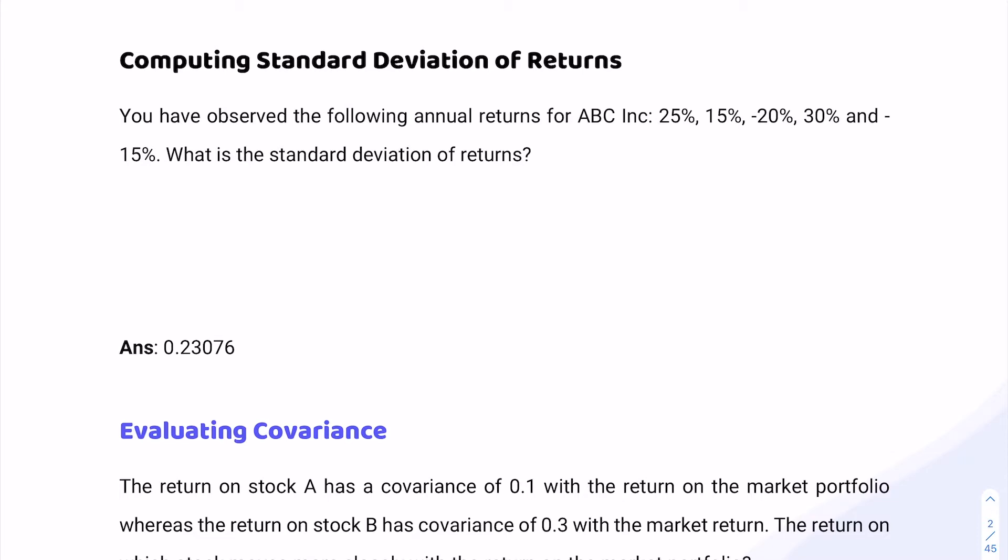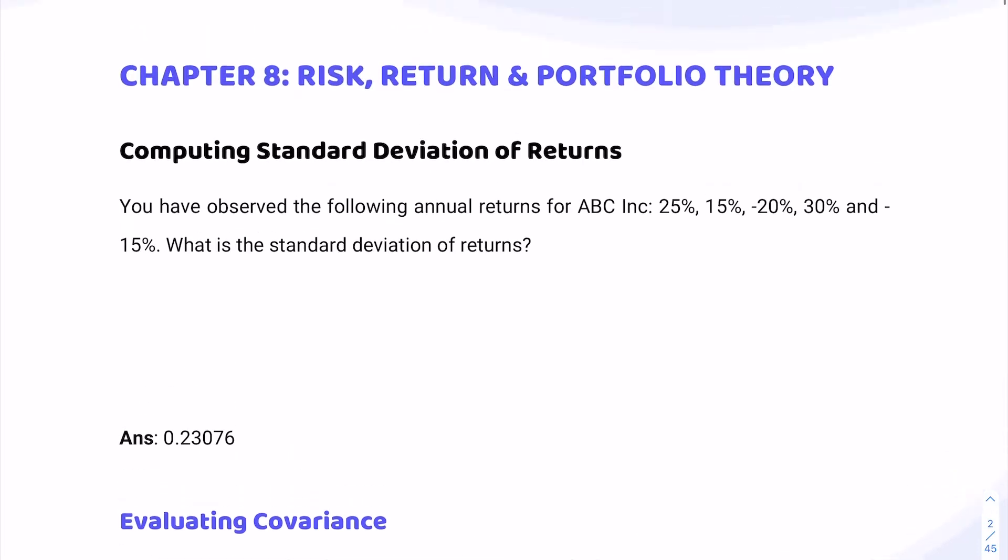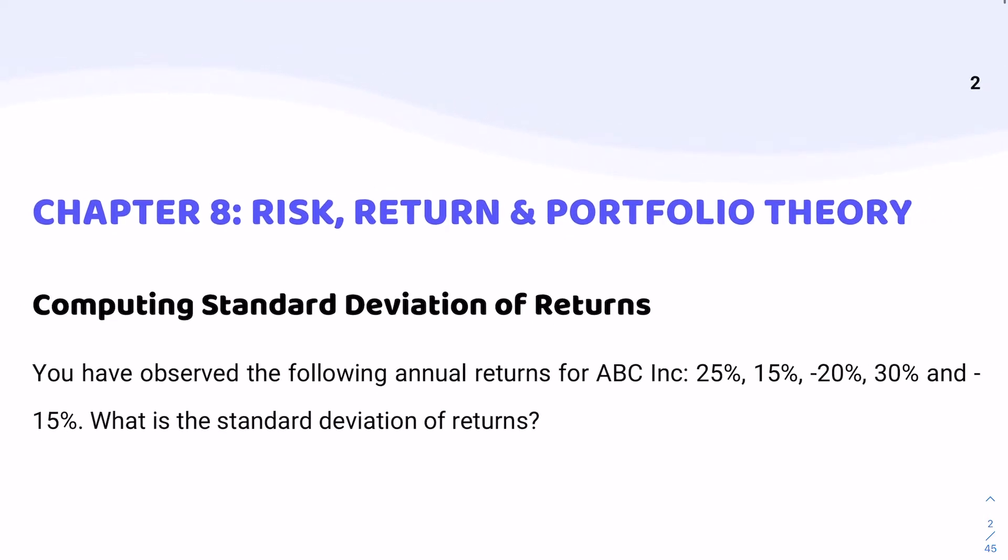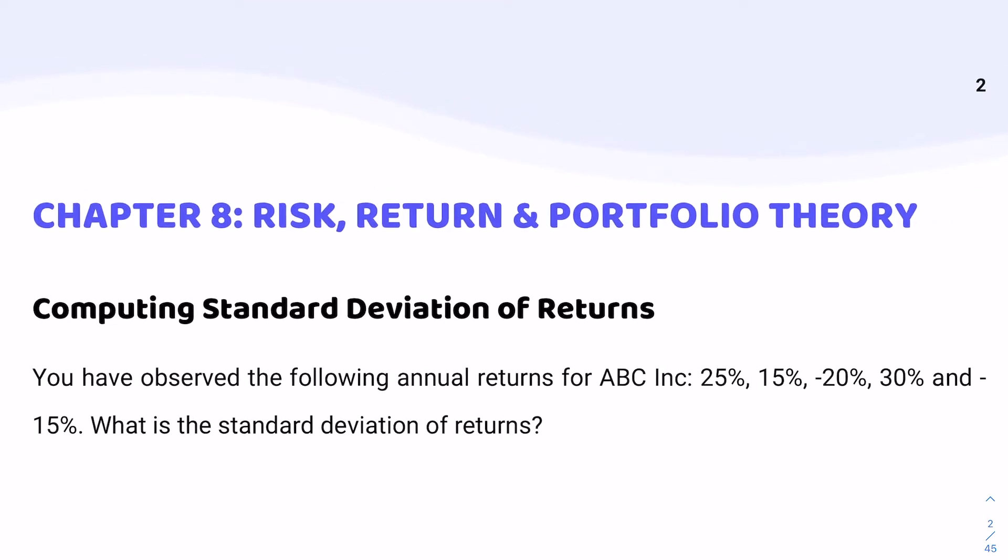In this question, we're looking at computing the standard deviation of returns. What is being asked from us? How do we break down the question? We're discussing that we have observed the following annual returns for ABC Inc: 25%, 15%, -20%, 30%, -15%. The first thing I want you to identify is that we're discussing this concept of observing returns.